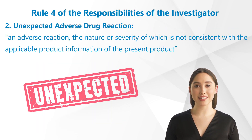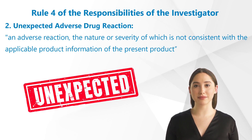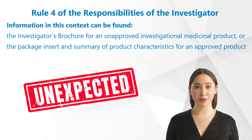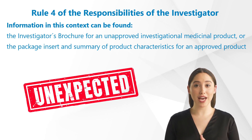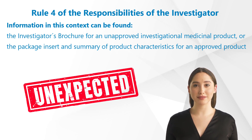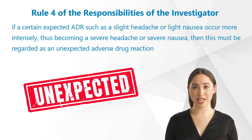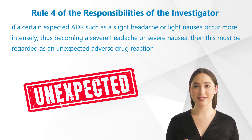An unexpected adverse drug reaction is an adverse reaction the nature or severity of which is not consistent with the applicable product information. This can be found, for example, in the investigator's brochure for an unapproved investigational medicinal product, or the package insert and summary of product characteristics for an approved product. This implies that if a certain expected adverse drug reaction such as a slight headache or light nausea occurs more intensely — becoming a severe headache or severe nausea — then this must be regarded as an unexpected adverse drug reaction.